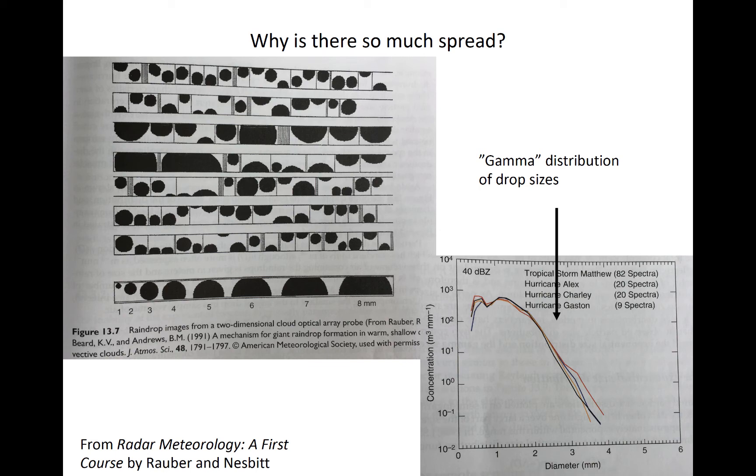The distributions all occurred when reflectivity was near 40 dBZ in this example. Drop size distributions often follow what we call gamma distributions, which is just a type of mathematical PDF, which is more the focus of a cloud physics course in remote sensing.